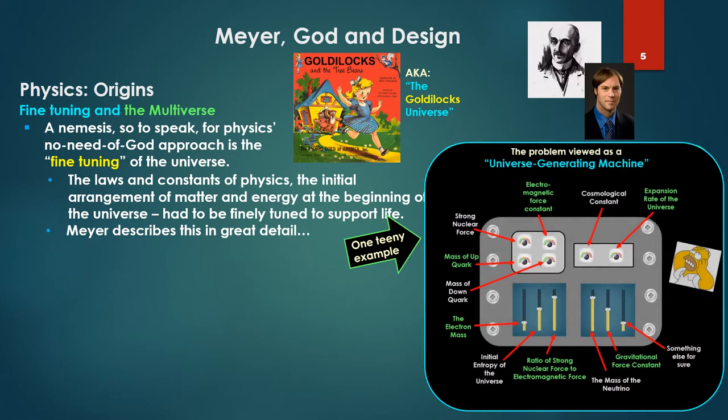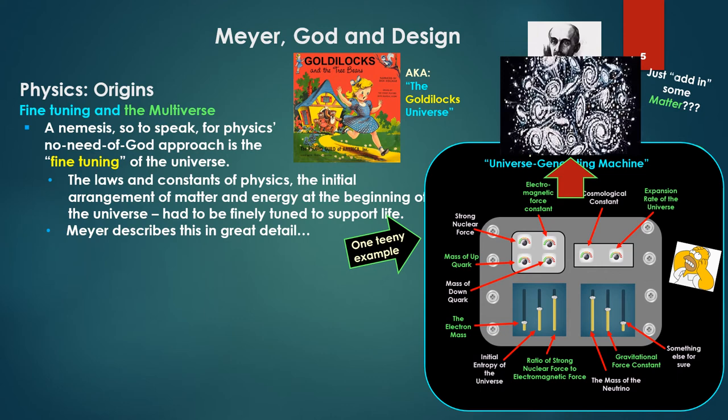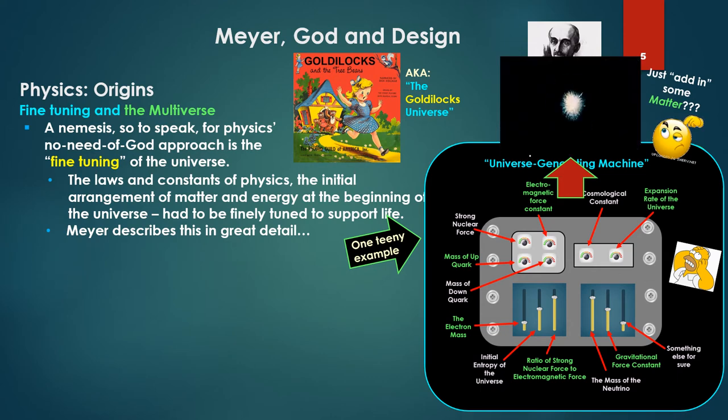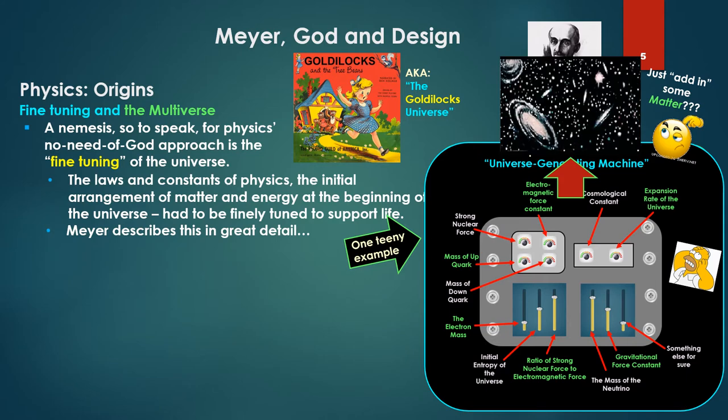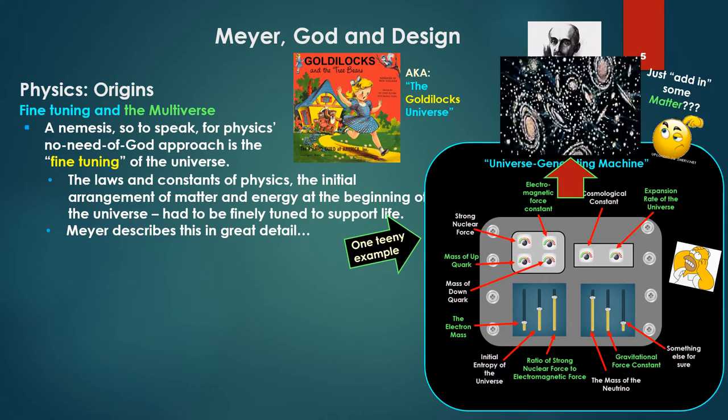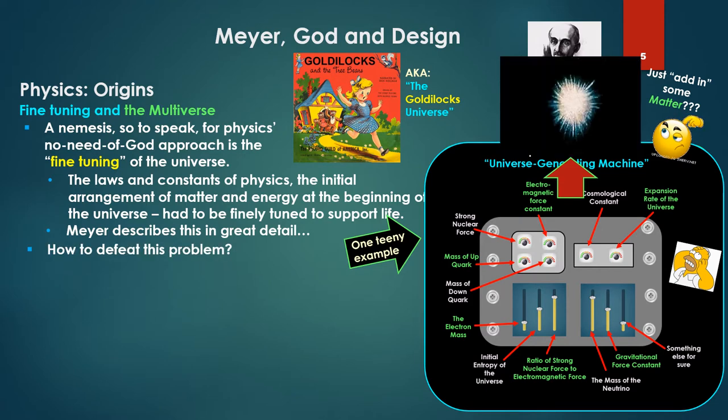We can look at it this way, taking this picture from Meyer's book. The problem is viewing the universe as a generated machine. If you're going to generate the universe, you have all these dials, twiddles, and slide switches you have to adjust just perfectly—strong nuclear force, mass of the up quark, electromagnetic force constant. And once all dialed in, you generate the universe, except for one small problem: you have to add in some matter, too. These are just abstract ratios; something's got to generate matter. Nevertheless, you need all that fine-tuning for the machine. How to defeat this problem without intentional design of this myriad of tunings and constraints?